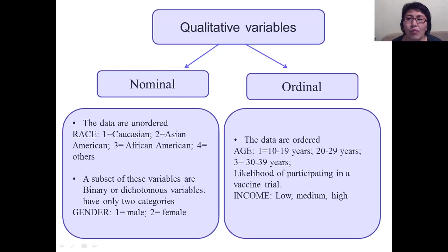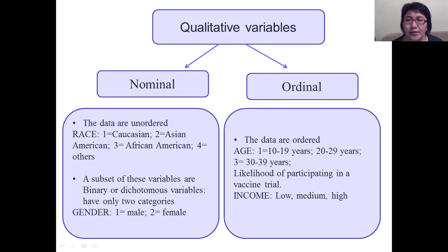Ordinal variables have ordered data. For example, age grouped as 10 to 19 years, 20 to 29 years, and so on. Another example is the likelihood of participating in a vaccine trial. Income is also an example of an ordinal variable: low, medium, and high.